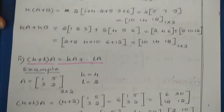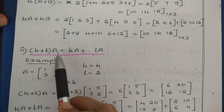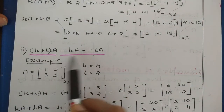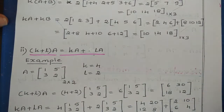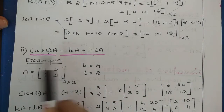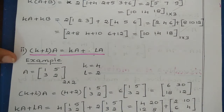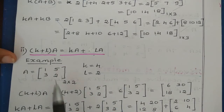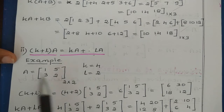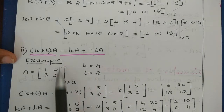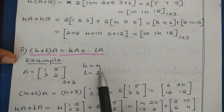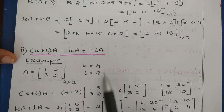Next we have the second property: (K plus L) into A equals KA plus LA. Here A is a matrix and K and L are scalar values. Let us take matrix A equal to 1, 5, 3, 2, which is a 2 cross 2 matrix, and scalar values K equal to 4 and L equal to 2.